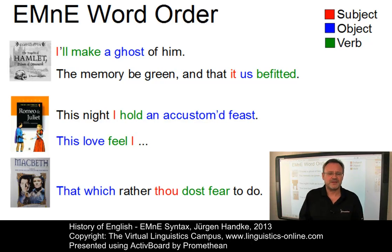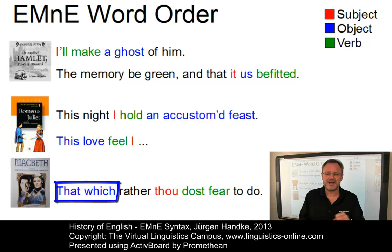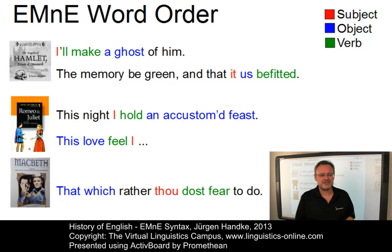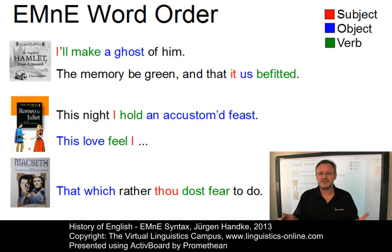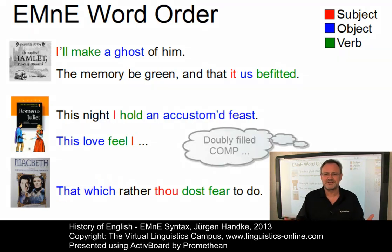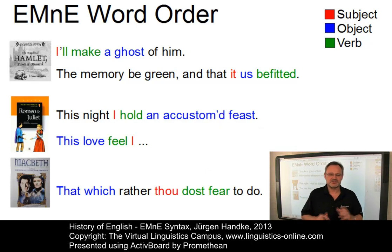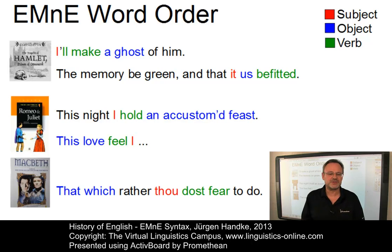By the way, did you notice the two items, 'that' and 'which', in succession? That is, two complementizers on the trot. Examples like these have played an important role in theoretical syntax, but that's a different story. Anyway, as a first conclusion, we can say that early modern English was predominantly an SVO language.